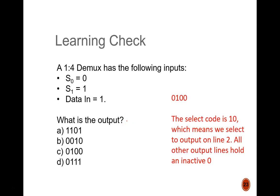The answer is 0, 1, 0, 0. The select code is 1, 0. Remember to read from most significant to least significant bit, which converts to decimal 2. Therefore, output bit 2 is selected and takes on the value of the input data, which is 1. All other bits in our design must equal 0.